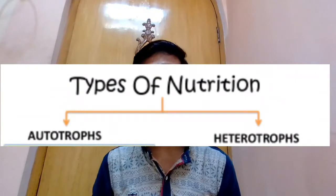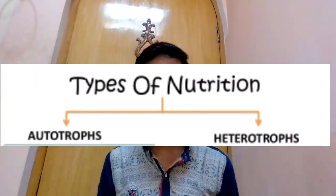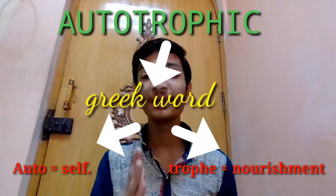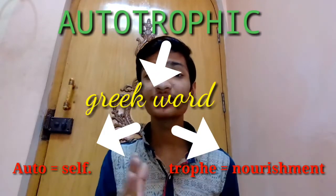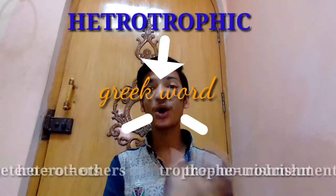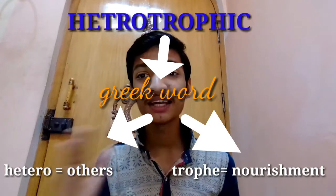Nutrition is of two types: autotrophic nutrition and heterotrophic nutrition. Autotrophic nutrition is derived from a Greek word — 'auto' means self, and 'troph' means nourishment. In the case of heterotrophic nutrition, it is also derived from a Greek word — 'hetero' and 'troph' means nourishment.